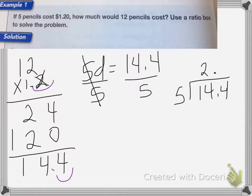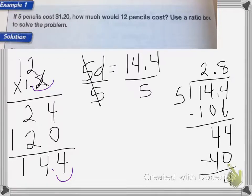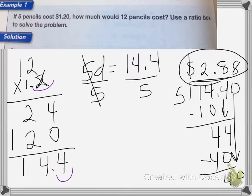5 goes into 14 twice, that's 10. Subtract to get 4. Bring down the 4. 5 goes into 44 eight times, that's 40. Subtract 4, add a 0, bring it down. 5 goes into 40 eight times. So the answer is $2.88 for 12 pencils.